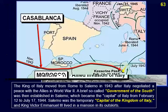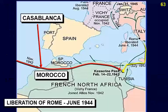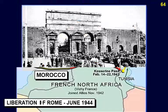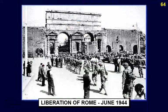The liberation of Rome by the Allies occurred in June of 1944.